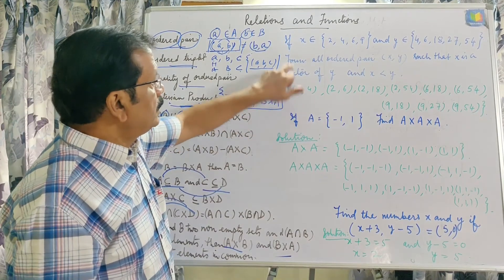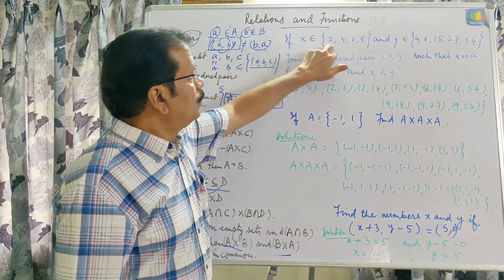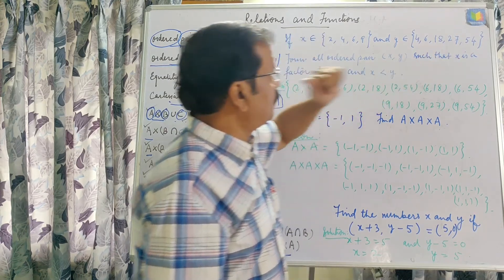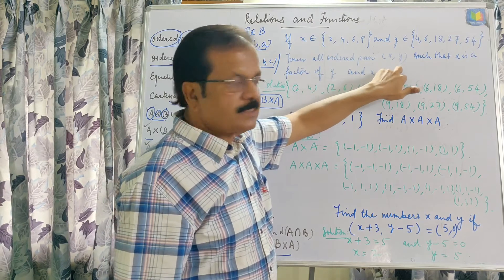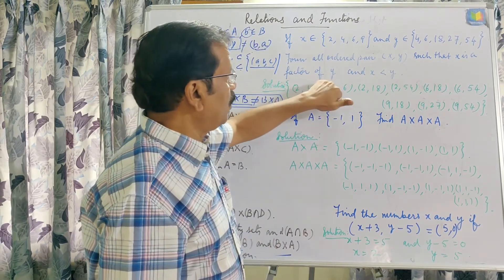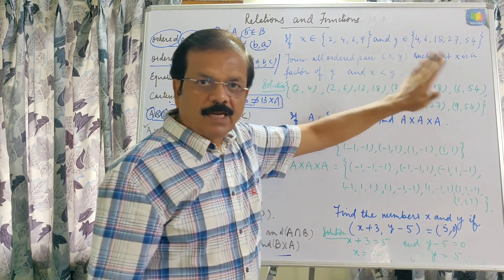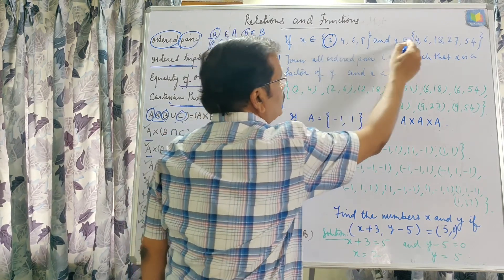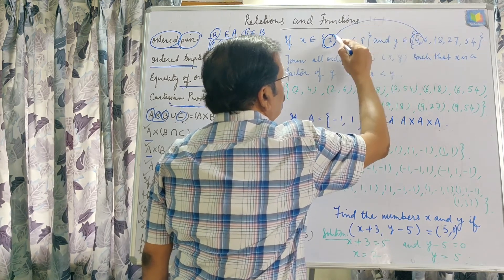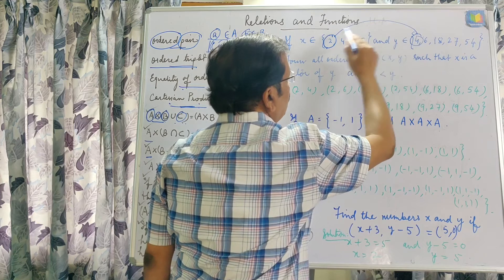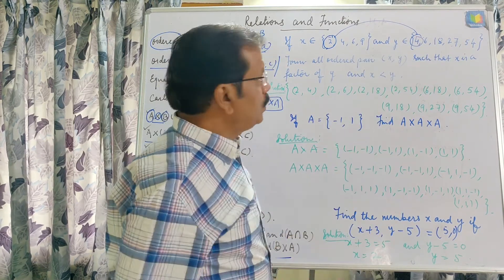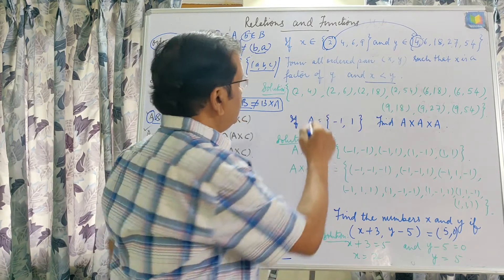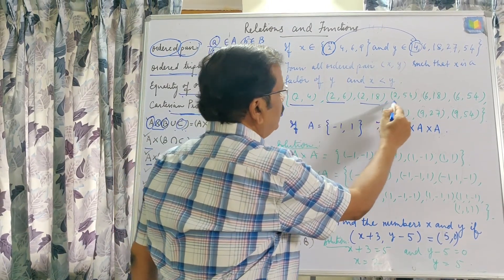Now take this question: X belongs to the set {2, 4, 6, 9} and Y belongs to {4, 6, 18, 27, 54}. Form all ordered pairs (X, Y) such that X is a factor of Y and X is less than Y. We start picking the first element from the first set and the second from the second. We can see: 2 is a factor of 4, 2 is a factor of 6, 2 is a factor of 18, 2 is not a factor of 27, and 2 is a factor of 54. So we can take (2,4), (2,6), (2,18), and (2,54).